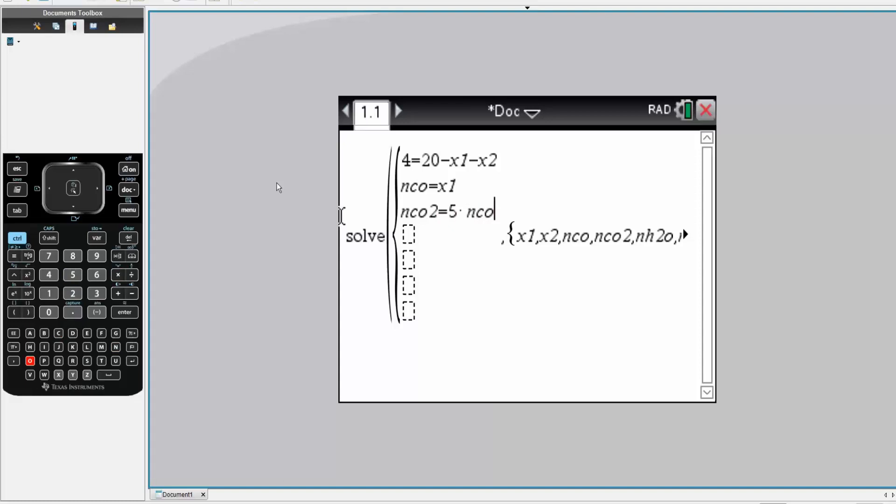Next, NCO2 is equal to extent of reaction two. Next, NH2O is equal to two times extent of reaction one plus two times extent of reaction two. And then oxygen is equal to 40 minus 1.5 times X1 minus two times X2.